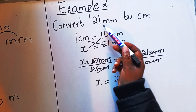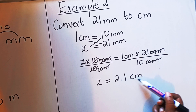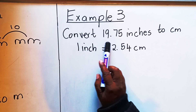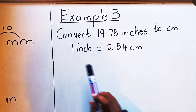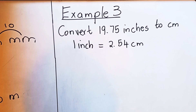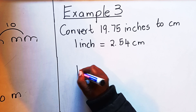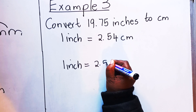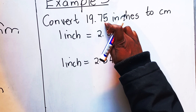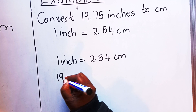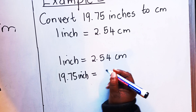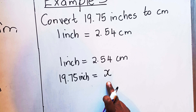Take your calculator: 21 divided by 10 gives you 2.1. The units left are centimeters. So 21 millimeters is the same as 2.1 centimeters. For our last example, we are asked to convert 19.75 inches to centimeters. In the question paper they will give you that one inch is equal to 2.54 centimeters. Write that in your book: one inch equals 2.54 centimeters. Then write 19.75 inches equals x centimeters.